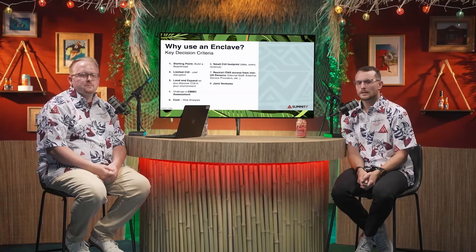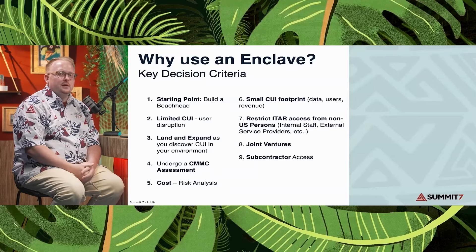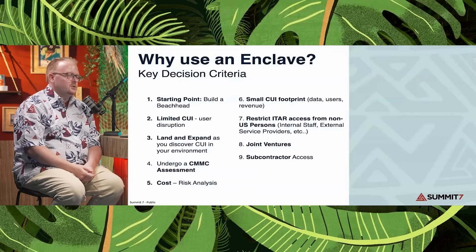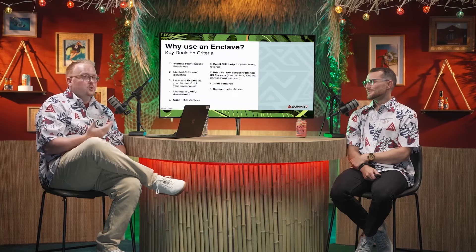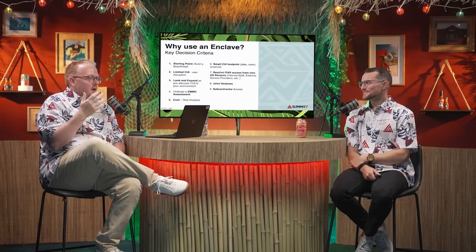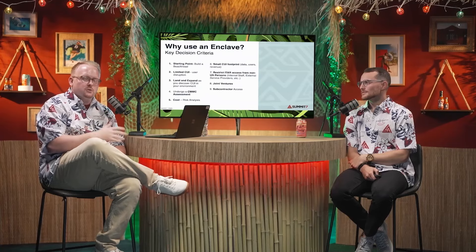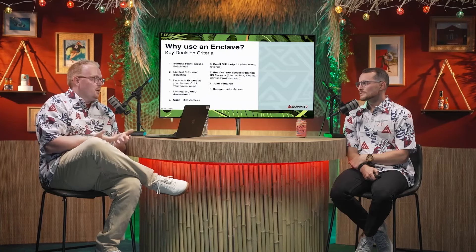Ninth: subcontractor access. Most companies in the supply chain haven't even started on 800-171. A great example: a private equity group doing due diligence on a machine shop found all their CUI stored on a server locked in the attic. A lot of people rely heavily on subcontractors, so using a virtual desktop or enclave environment for them to access, view, and collaborate on that data is a huge plus for managing your supply chain risk.